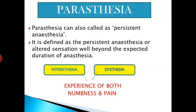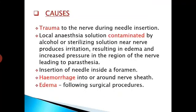Patients experiencing paresthesia also experience hypersthesia and dysesthesia, meaning both numbness and pain. Causes for paresthesia include trauma to the nerve during needle insertion, local anesthesia solution contaminated by alcohol or sterilizing solution near the nerve producing irritation resulting in edema and increased pressure in the region of the nerve. Additional causes include insertion of the needle inside a foramen, hemorrhage into or around the nerve sheath, and edema following surgical procedures.